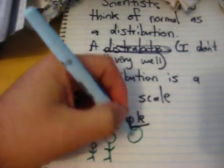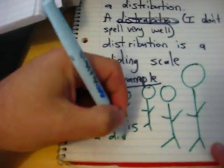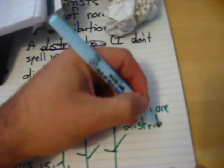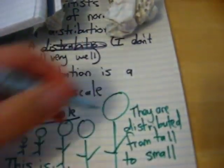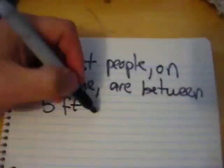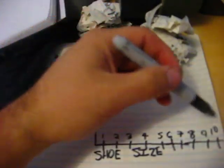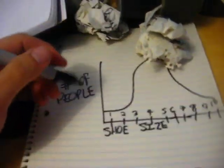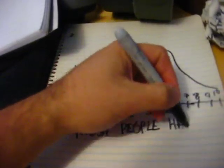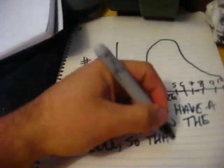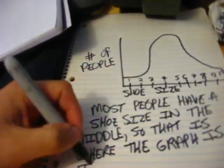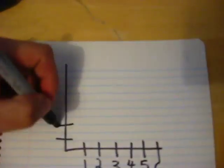Here's an example: poor little Johnny is the shortest kid in class, while Ralphie May is the tallest. This is a distribution — people start at one end, either small or tall, and move to the other end. Most people on average are between five and six feet tall. Similarly, think of shoe size: most people won't have a size one and most won't have a size ten — most end up somewhere in the middle, around size five, six, or seven. That's why the middle of the graph is the highest.